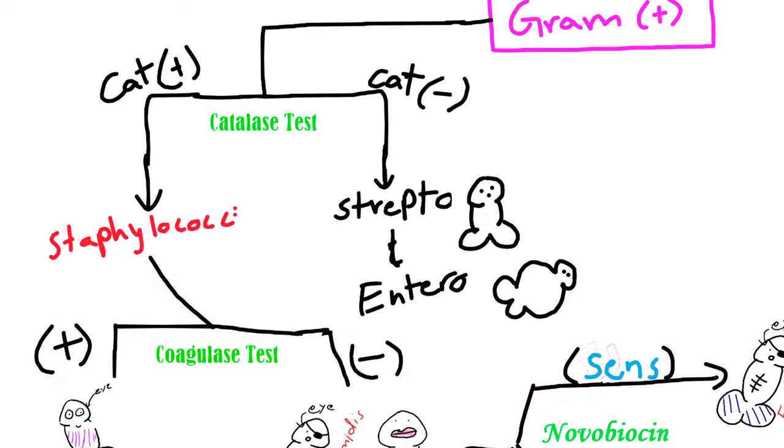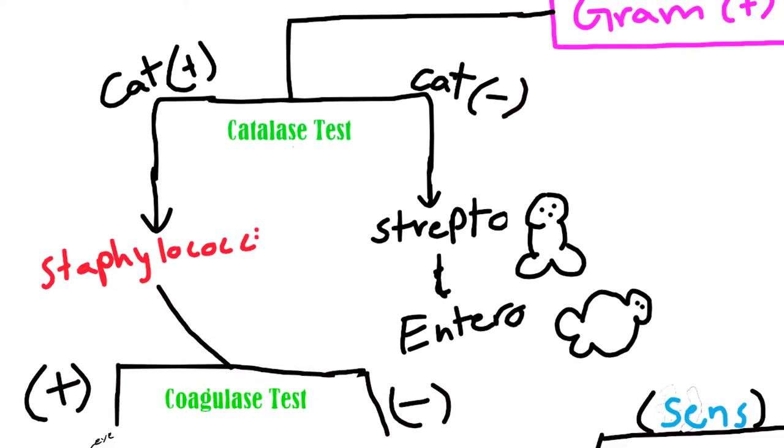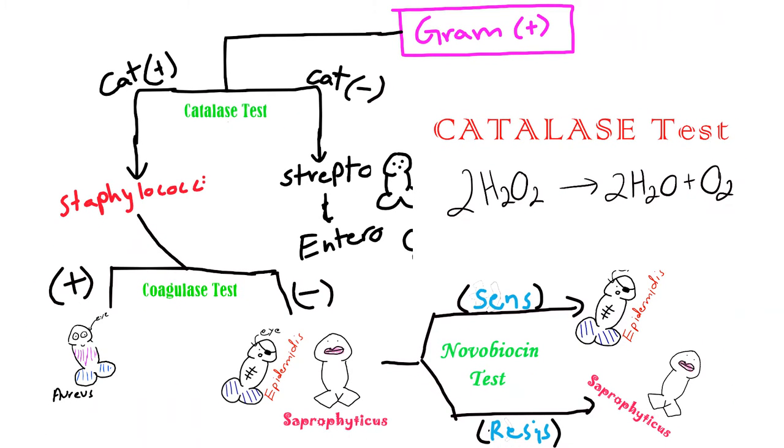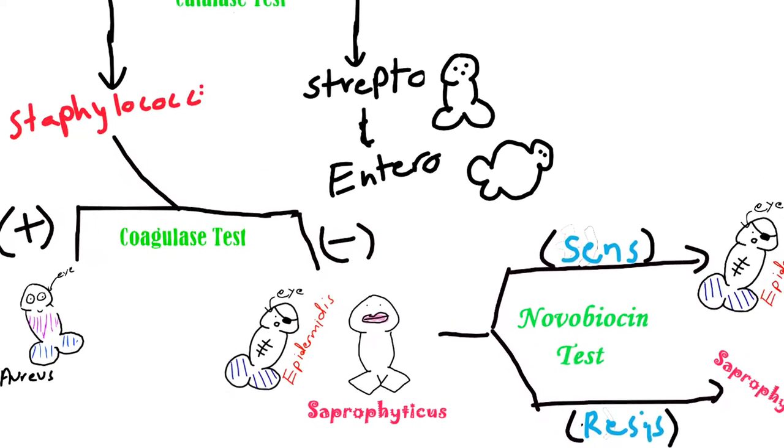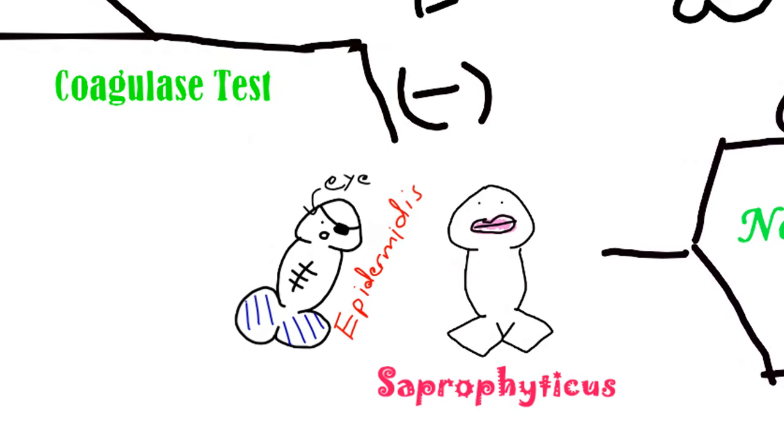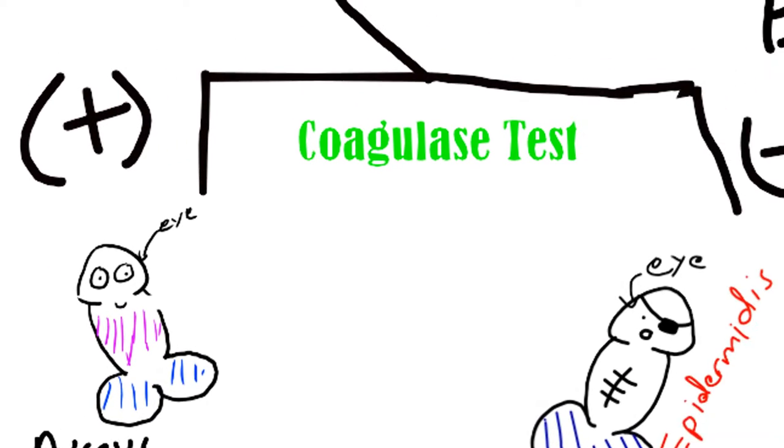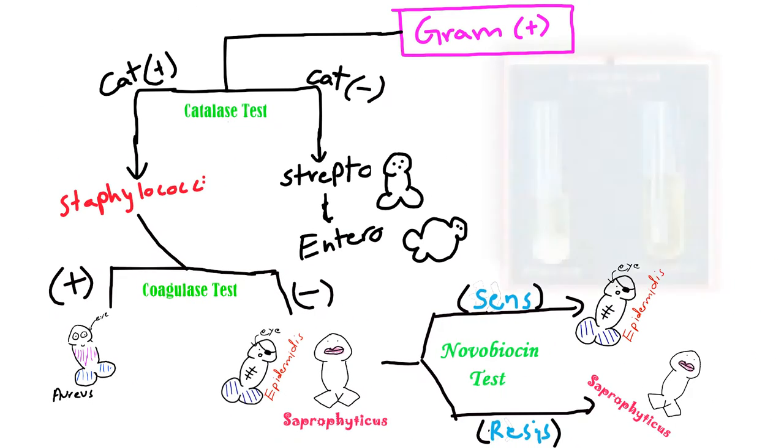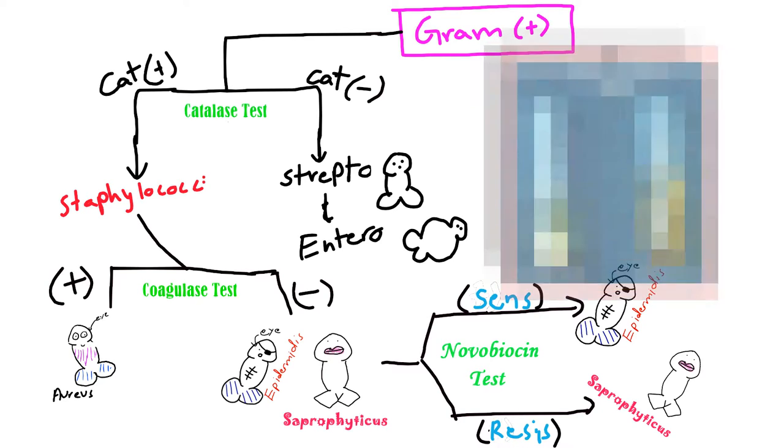It's also catalase positive. Just remember this test differentiates staph from strep and turns hydrogen peroxide into water and oxygen. The next step is to differentiate Staphylococcus saprophyticus and Staphylococcus epidermidis from Staphylococcus aureus. The way we do that is the coagulase test. In this case, both staph epidermidis and staphylococcus saprophyticus are coagulase negative, also known as CoNS.